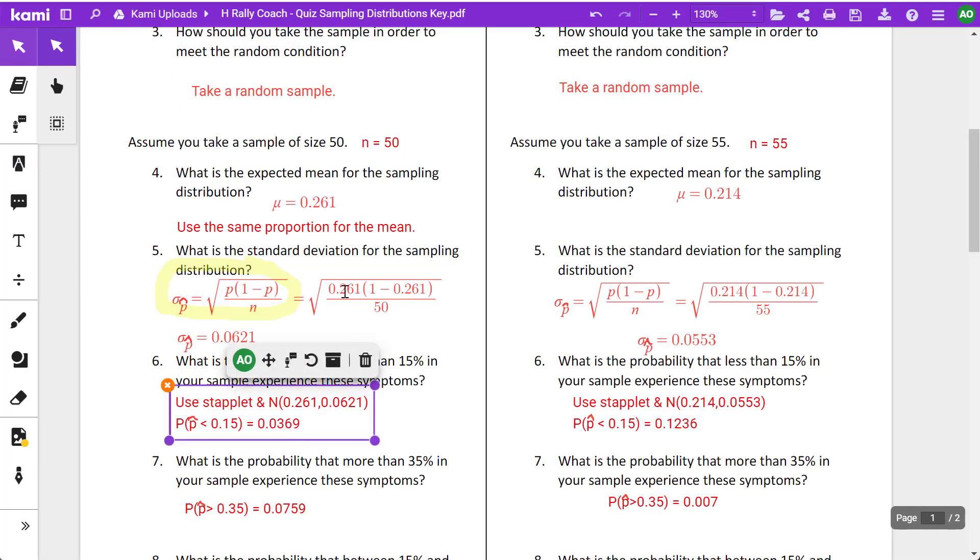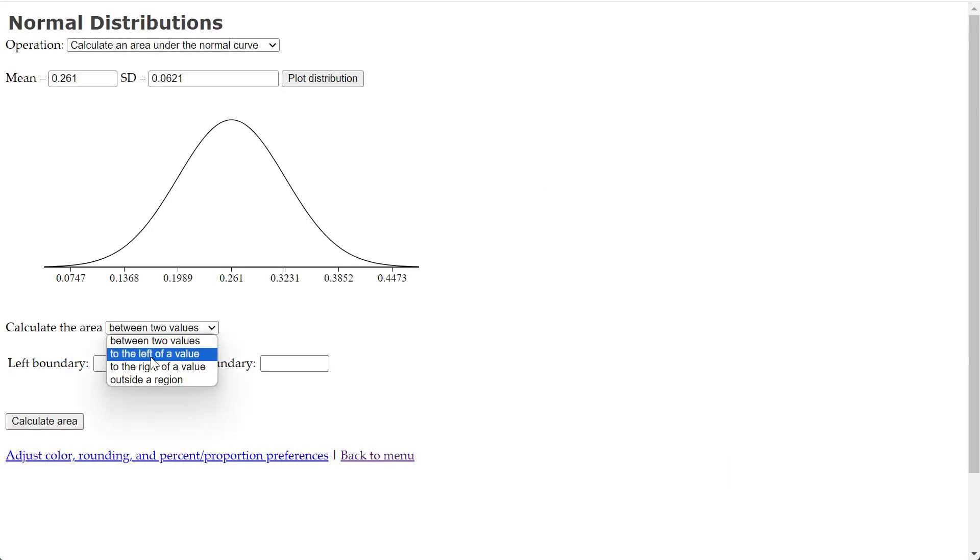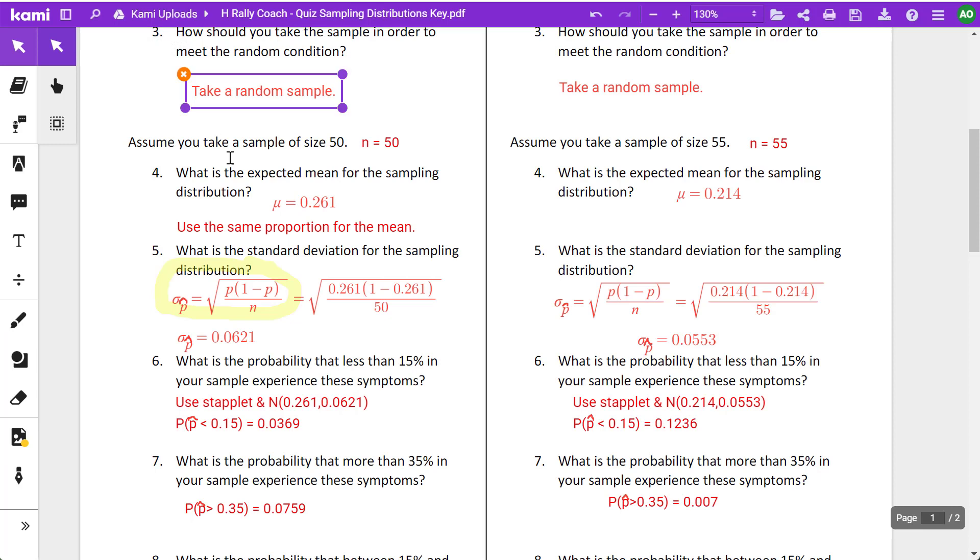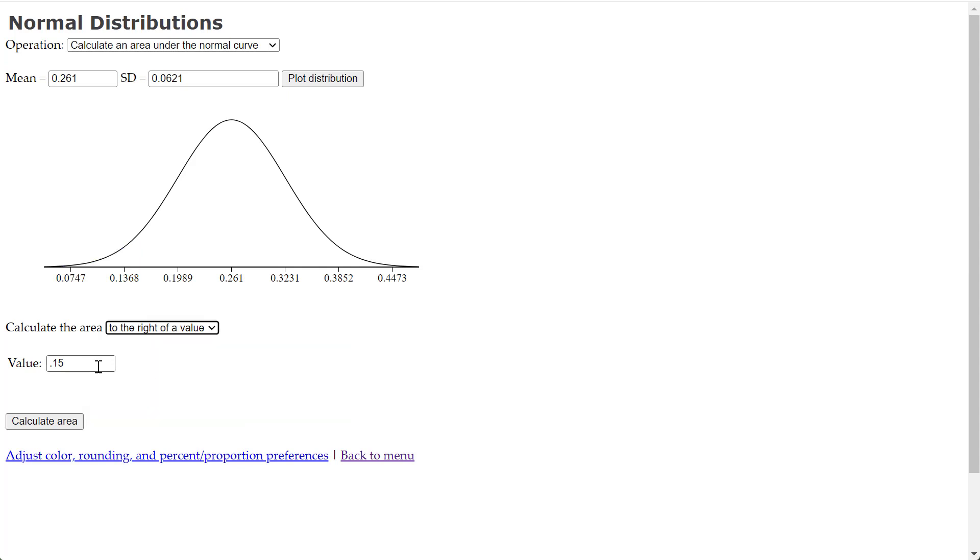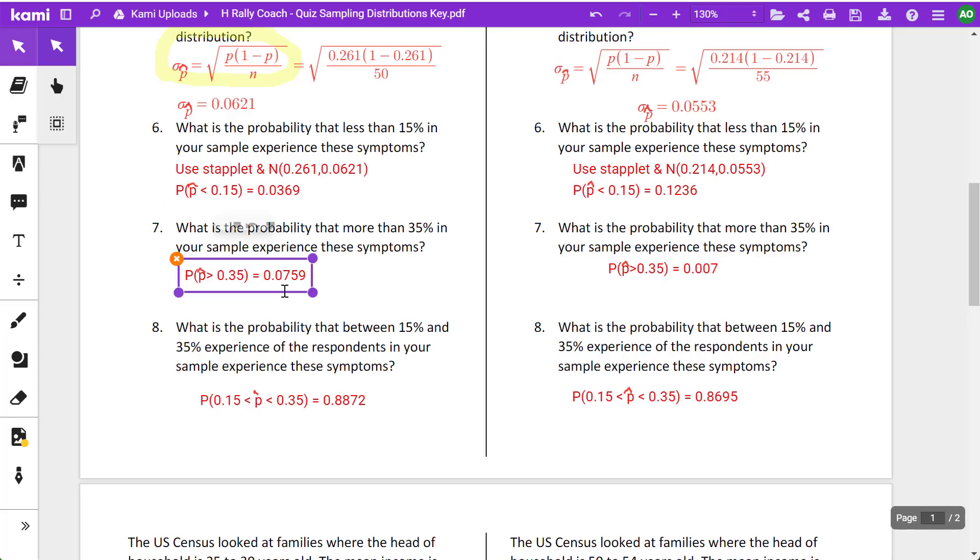On the left, what is the probability that less than 15% in your sample experience these symptoms? So we have our mean, 0.261. I put these in the staplet 0.261 and 0.0621. So confusing when it's the same digits. And I want to know the probability less than 15%, change to a decimal to the left of a value 0.15. Calculate, show labels. And then I get 0.0369. Once you get the normal distribution model on your staplet, it's pretty easy.